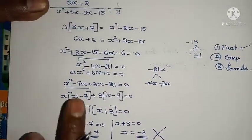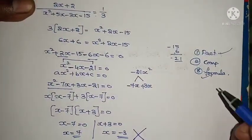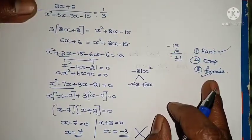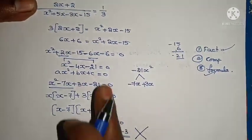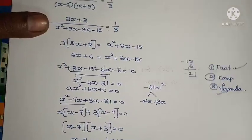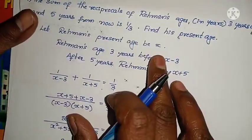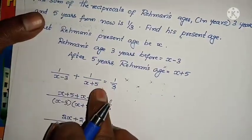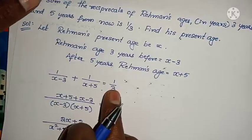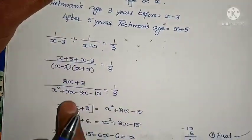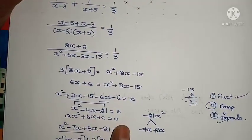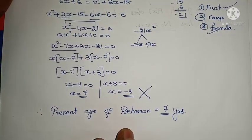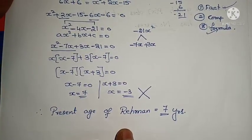Did you understand? I used factorization method. If you want, you can also use the quadratic formula: X equals minus B plus or minus root of B squared minus 4AC, divided by 2A. That is also easy. To summarize: I took present age as X, 3 years before is X minus 3, after 5 years is X plus 5. Formed the reciprocal sum equation, took LCM, cross multiplied, got the quadratic equation, and solved by factorization.